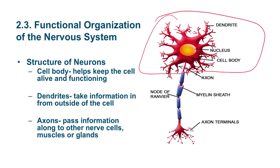Next we have the dendrites — these little branches that jet out all around the cell. They take information in from outside the cell. They're feelers that look out for information and bring that information into the center of the cell, into the cell body.